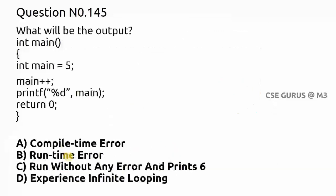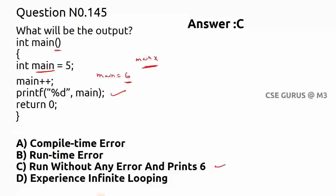Coming to question number 145: notice the difference — this int main has parentheses '()' after it, but here 'main' is used without parentheses as a variable. Since 'main' is not a keyword in C, it can be used as a variable name. Here main = 5, then main++ makes it 6, and printf prints 6. It runs without error and prints 6 — option C is correct.